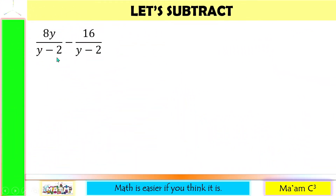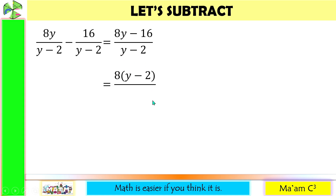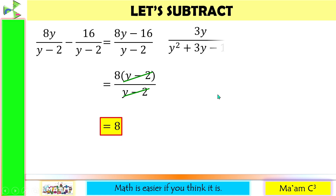Now let us subtract. I have here 8y over (y minus 2) minus 16 over (y minus 2). Let us subtract our numerators — 8y minus 16 — and copy the denominator. From here, we can factor out 8. 8y divided by 8 is y, and negative 16 divided by 8 is negative 2. Copy the denominator y minus 2. You can clearly see that (y minus 2) is a common factor, so let's cancel them. Our final answer is 8.